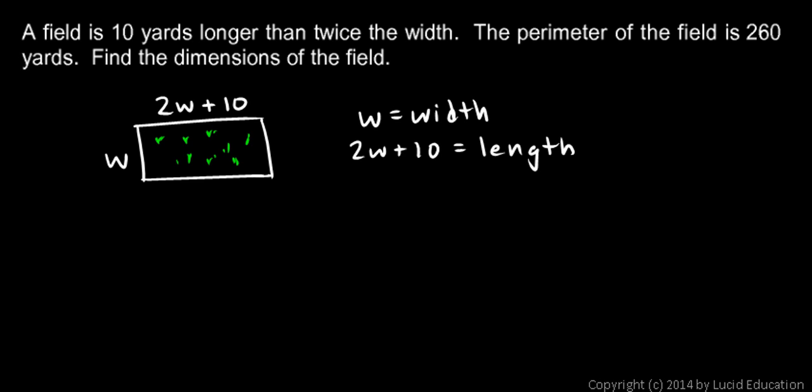Now we're told that the perimeter of the field is 260. And remember that the perimeter is the distance around. So if we start at one corner and we walk all the way around the field, the total distance is the perimeter. So to help me think about this, I'm going to go ahead and write a W over here, because this side is going to be the same as that. And I'm going to go ahead and write 2W plus 10 down on the bottom, because this edge will be the same as that.